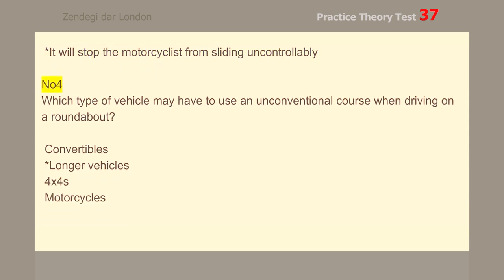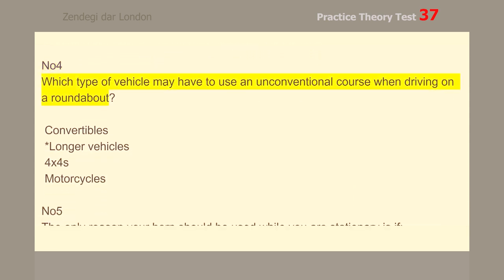Number 4. Which type of vehicle may have to use an unconventional course when driving on a roundabout? Longer vehicles.